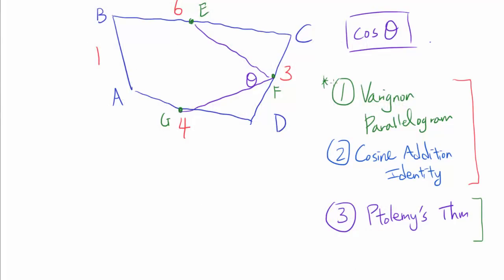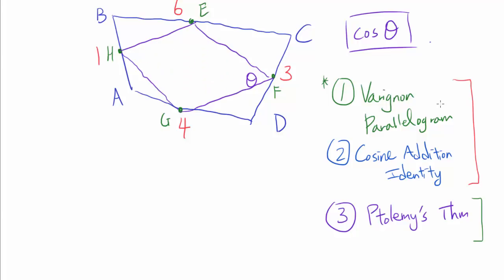Let's get started with method one. E, F, and G are midpoints of BC, CD, and AD respectively. So why don't we introduce point H such that H is the midpoint of AB? We are introducing symmetry, and whenever you introduce symmetry in a mathematical problem, things usually get a lot better. We now have a quadrilateral formed by connecting the midpoints of the sides, and this quadrilateral is the Varignon parallelogram.